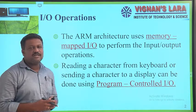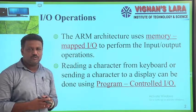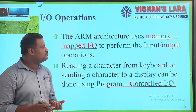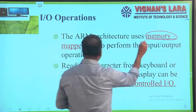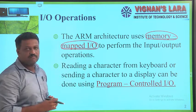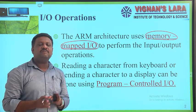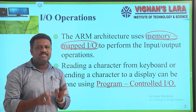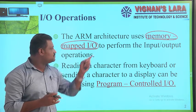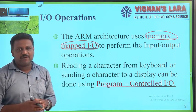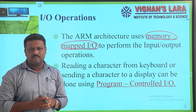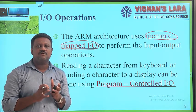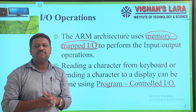ARM architecture uses memory-mapped I/O to perform the input and output operations. Memory-mapped I/O is one type of I/O addressing scheme. Basically, there are two I/O addressing schemes: one is memory-mapped I/O and the second one is I/O mapped I/O, also called isolated I/O. In ARM architectures, for addressing of I/O devices, we use memory-mapped I/O.